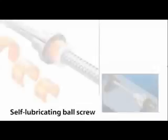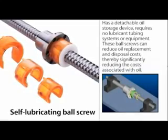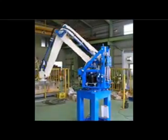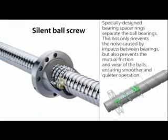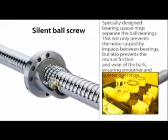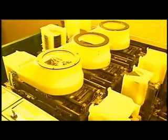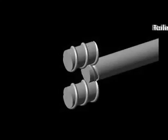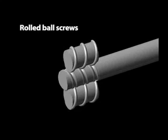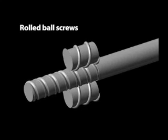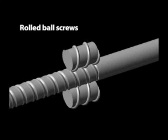Self-lubricating ball screws have a detachable oil storage device and require no lubricant tubing systems or equipment. These ball screws can reduce oil replacement and disposal costs. Silent ball screws have specially designed bearing spacer rings separating their ball bearings. This not only prevents the noise caused by impacts between bearings, but also prevents the mutual friction and wear of the balls, ensuring smoother and quieter operation. Roller ball screws are produced by using rollers to create the threads in the screw surface, then subjected to heat treatment, polished and assembled. These ball screws are easy to produce, reasonably priced, and can be shipped quickly.